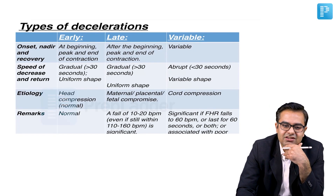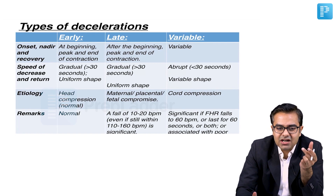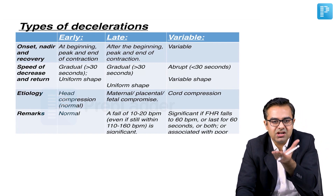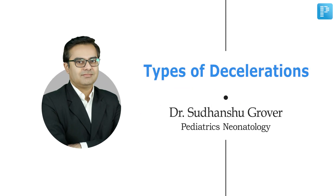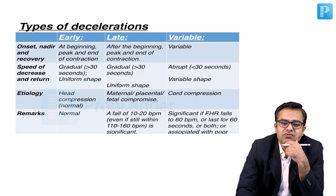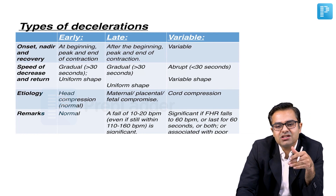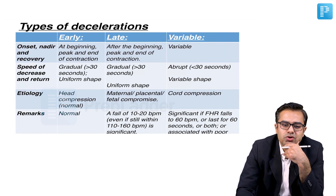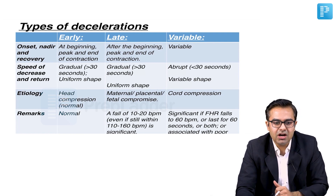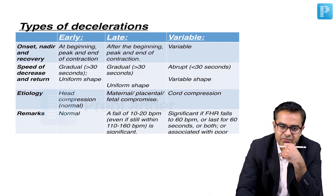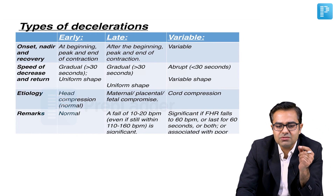While analyzing decelerations, we should understand how is the onset, how is the nadir, and how is the recovery. We look at the types of decelerations which include early, late, and variable decelerations. We should also know the speed of decrease and return of fetal heart rate, what is the etiology, and we will look at some special points.